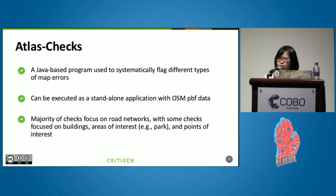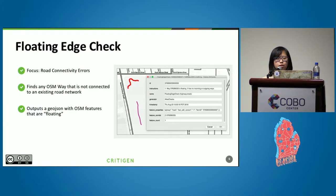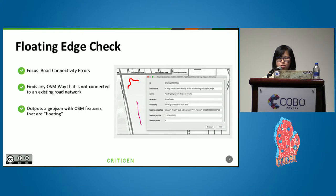Let me give you an example of how Atlas Check works and how it visualizes results. The floating edge check is one of the checks in Atlas Check — it focuses on flagging and finding road connectivity errors. It identifies OSM ways that are disconnected from the existing road network. You can see the snapshots here; you can put the GeoJSON outputs into QGIS or other tools you are using. The output is a GeoJSON, a pretty common format that you can plug and play based on your needs.